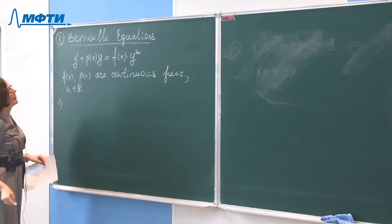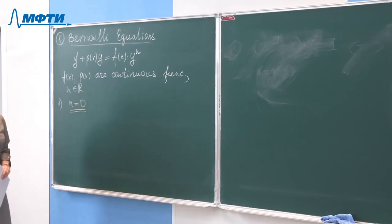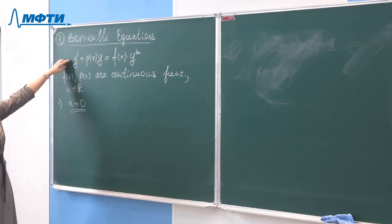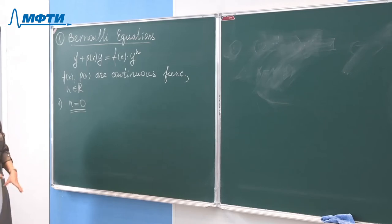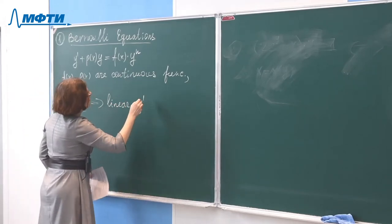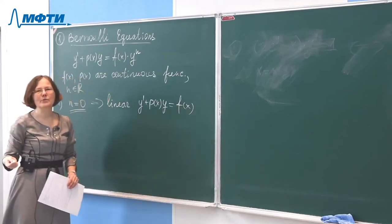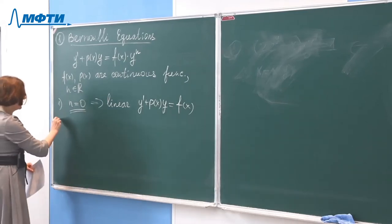There are two particular cases. When N equals zero, the equation becomes Y-prime plus P(x)·Y equals F(x) — this is a linear equation, solvable as described two weeks ago. When N equals one, the equation Y-prime plus P(x)·Y equals F(x)·Y is separable, and variables can be separated and integrated easily.